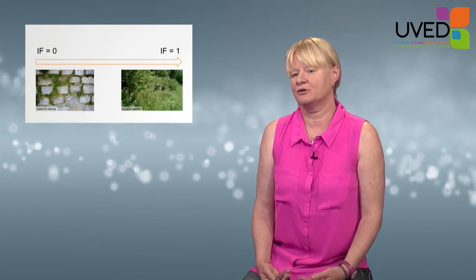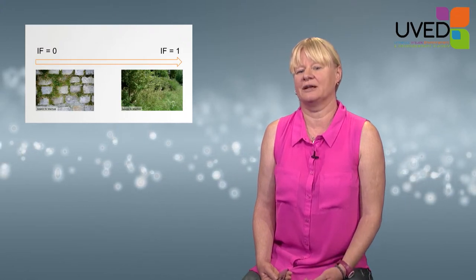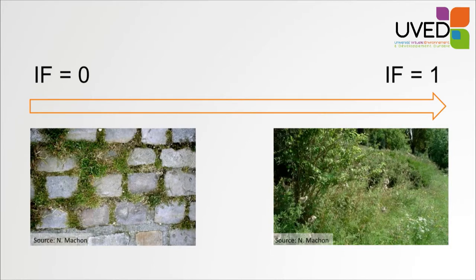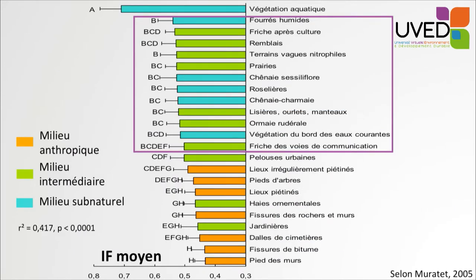The index is close to zero in poor spaces — for example, grass growing between cobblestones in a yard — and close to one when we are in a natural area with more interesting species growing. Green areas were observed and analyzed in the Eau de Seine area close to Paris, and we assessed the spaces depending on the quality of the flora. Very anthropic environments, intermediary environments, and sub-natural environments are very different. The more natural green areas benefit from the most interesting biodiversity, whereas the bottom of walls or cracks in the tarmac obviously have the poorest biodiversity, and only very banal species will grow.